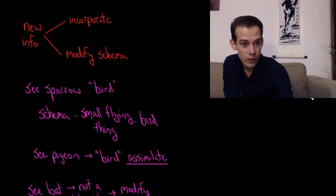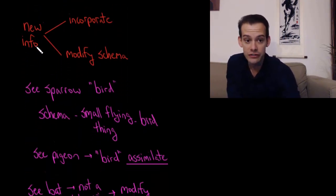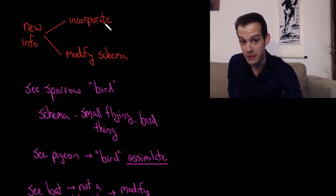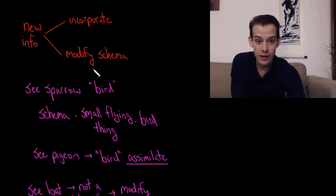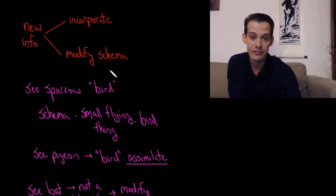So we can think of it as these being the two main choices. We have something new that we're going to encounter, and then we either fit it into what we already know—we incorporate it or assimilate it—or we have to change what we thought we knew about the world in order to make sense of this. We have to modify our schema or engage in accommodation.